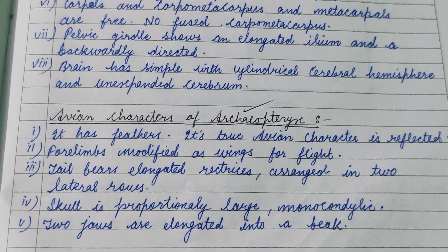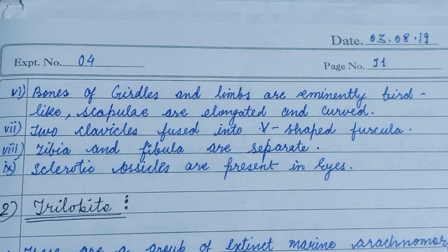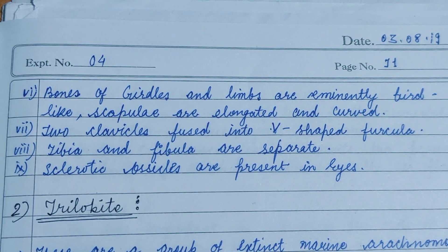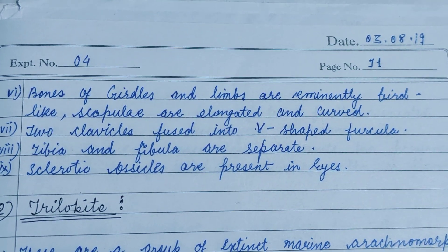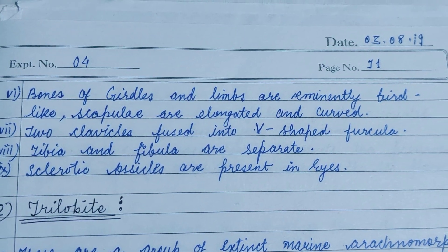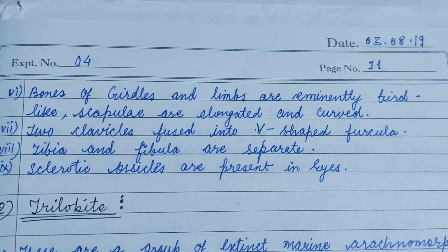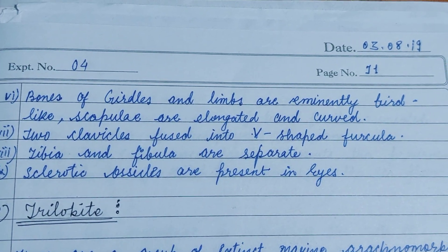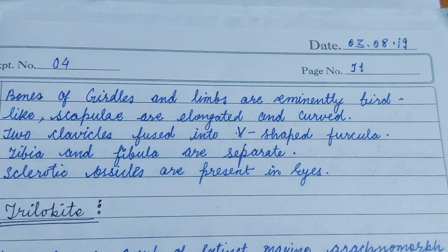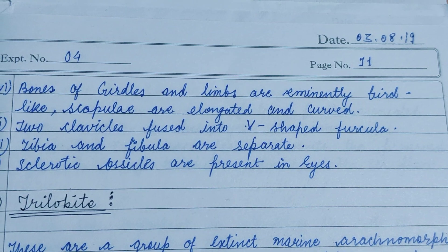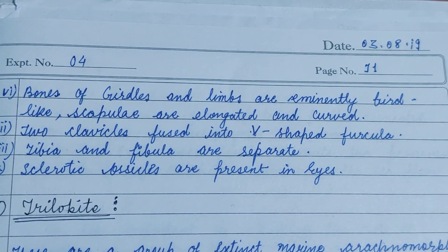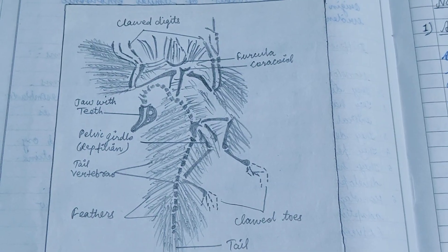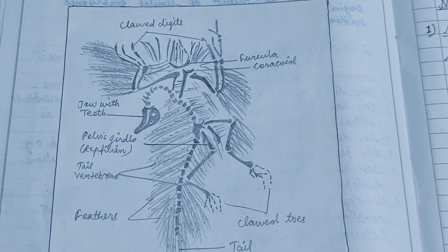While reptiles possess a dicondylic skull, Archaeopteryx shows the avian monocondylic skull, which allows the head to move. More avian features include bones of the girdles and limbs that are eminently bird-like, scapulae that are elongated and curved, and two clavicles fused into a V-shaped furcula. The tibia and fibula are separated, and sclerotic ossicles are present in the eyes.